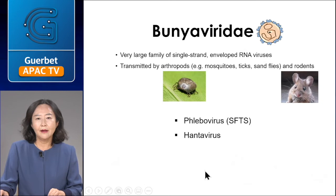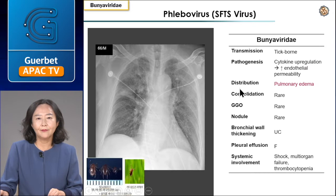Severe fever with thrombocytopenia syndrome (SFTS) is an emerging infection, with the virus isolated in 2009. SFTS virus is transmitted by ticks. The pathogenesis of SFTS virus is similar to hantavirus, and the typical manifestation is pulmonary edema.